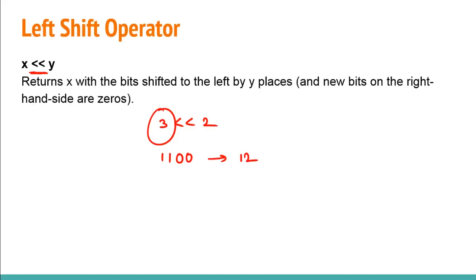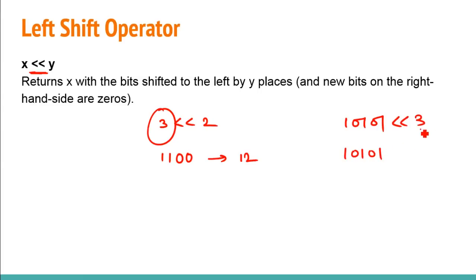Let's take another example — say you have the binary value 10101 and you do a left shift by three. All you have to do is add three zeros at the end. That's the left shift operator — simple as that.